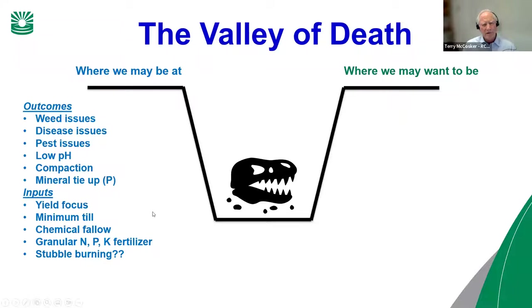After a survey of people in Western Australia, some of the outcomes given to me as current issues were: weed control issues, disease issues, pest issues, low pH — and I don't think I've heard of lower pHs than in Western Australia — soil compaction, and mineral tie-up. The inputs are yield-focused: minimum till, chemical fallow, granular NPK, and in some cases stubble burning. When I ask whether some of those inputs and focuses are actually responsible for some of those outcomes, it's fairly obvious that they are.